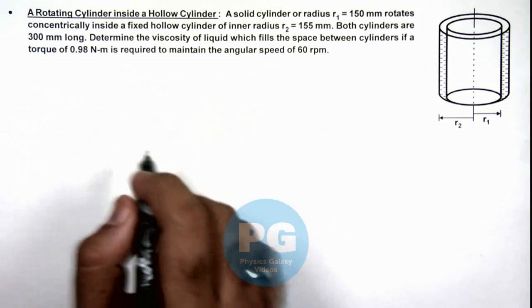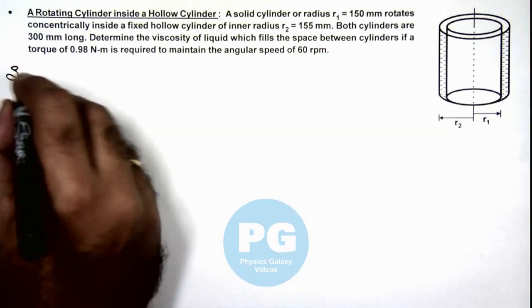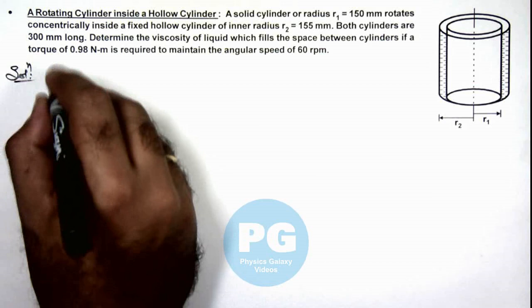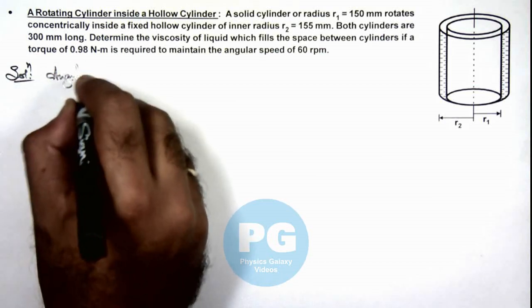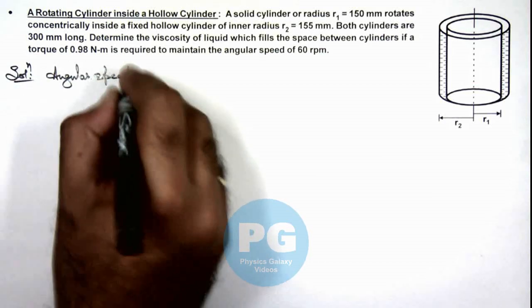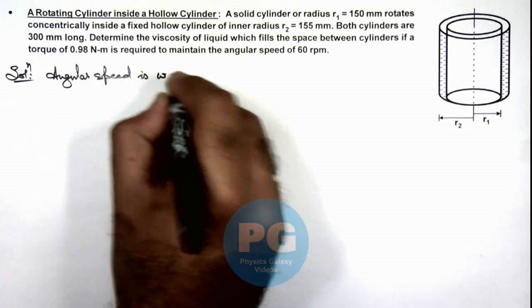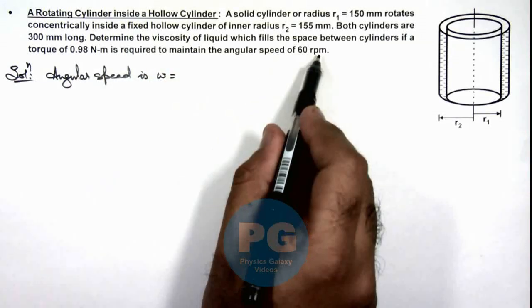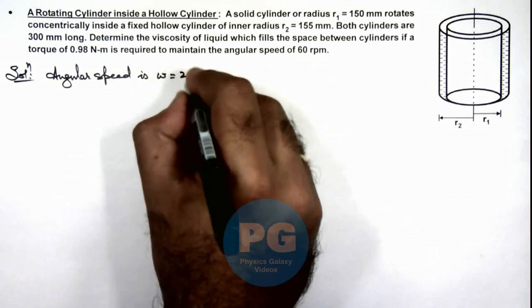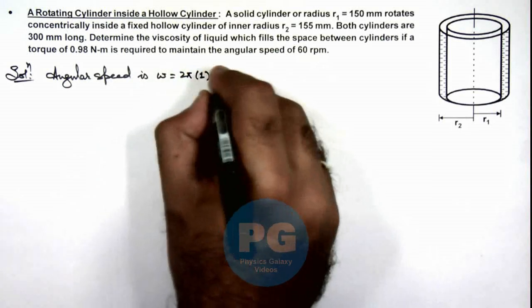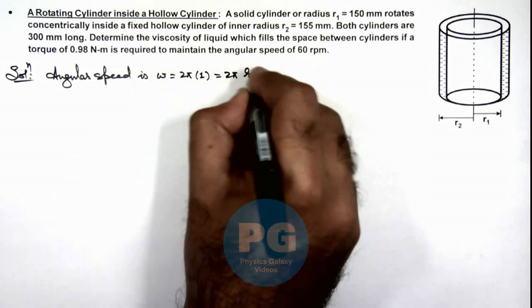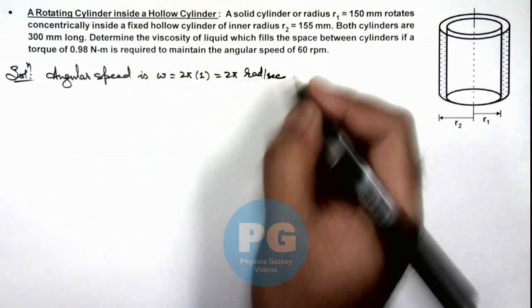Now in this situation, we can see the angular speed which is maintained here is omega, which we write as 60 rotation per minute, that is 1 revolution per second, so this is 2π multiplied by 1, which is 2π radian per second.